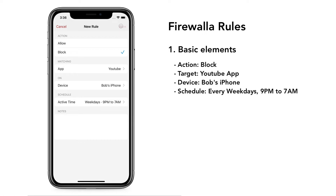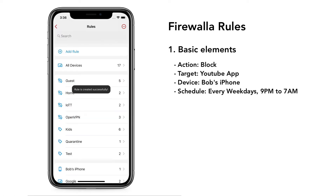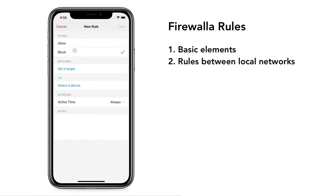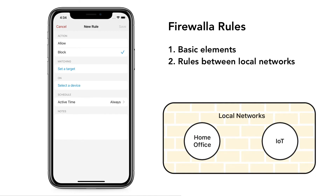Tap Save. A new rule is now created. If you're using Firewalla as a router, you can use rules to manage traffic between local networks. For example, we have created several network segments in our home, and we want to block any traffic coming from the IoT network to our home office network.